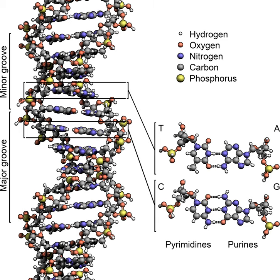These structural modifications inhibit transcription and replication processes, causing both toxicity and mutations. As a result, DNA intercalators are often carcinogens, with benzopyrene diol epoxide, acridines, aflatoxin, and ethidium bromide being well-known examples.